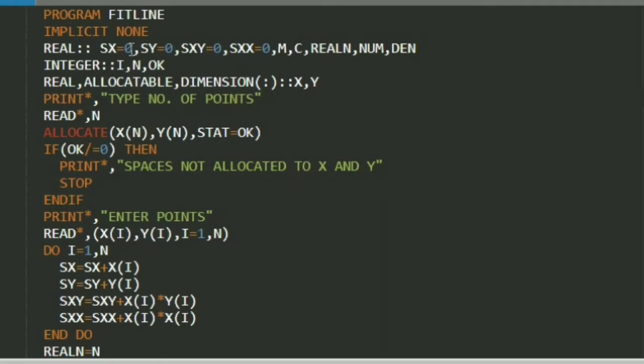Then I have real type variables declared: sx, sy, sxy, x, xx, mc, realn, numerator and denominator. And then we can assign the value 0.